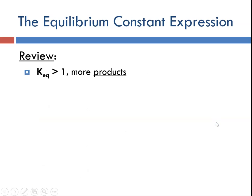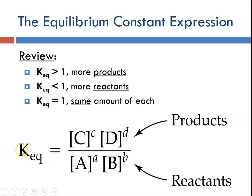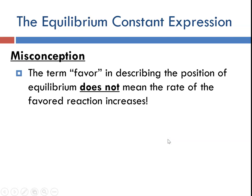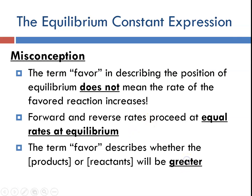A common misconception: the term 'favor' in describing the position of equilibrium does not mean that the rate of the reaction increases for the favored direction — it's about the concentrations. Forward and reverse rates proceed at equal rates when you are at equilibrium. The term 'favor' describes whether the concentration of products is going to be greater, or the reactants will be greater.